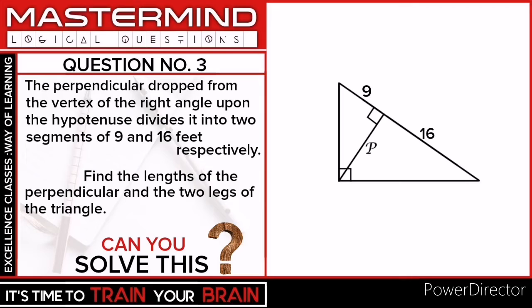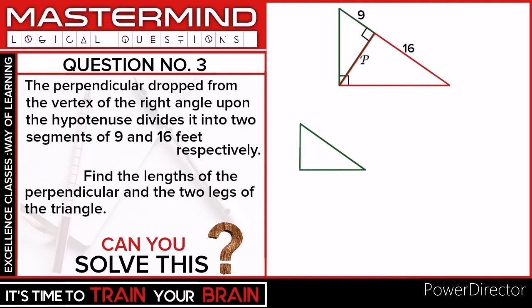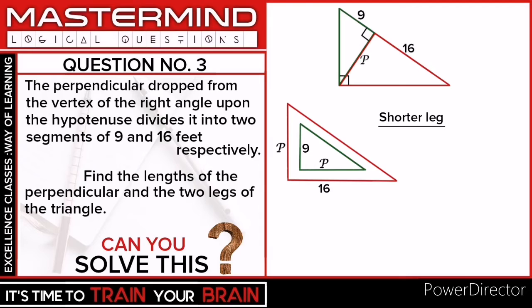The perpendicular to the hypotenuse of a right triangle creates a special set of triangles. The green triangle and the red triangle here are similar triangles, which means the ratio of their lengths and angles are the same. In particular, the ratio of the shorter leg to the longer leg of the green triangle will be the same as the ratio of the shorter leg to the longer leg of the red triangle.